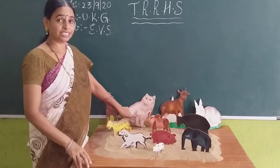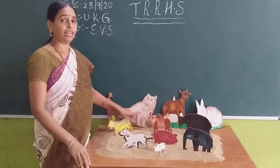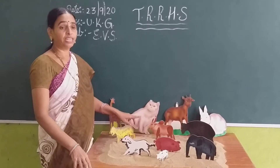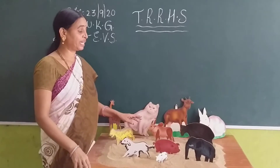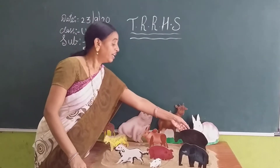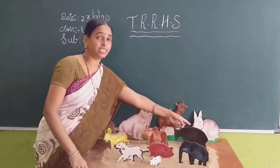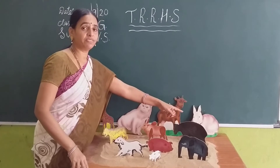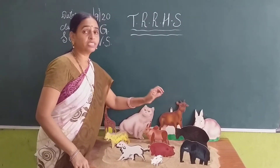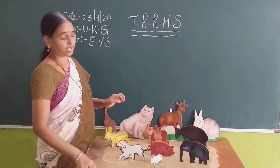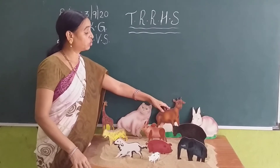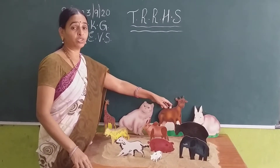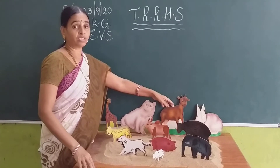Cat is an animal we see in our surroundings and someone keeps as a pet. Rabbit is also an animal which we see in our surroundings, in some of our houses. This is goat. You see so many goats roaming in our surroundings.